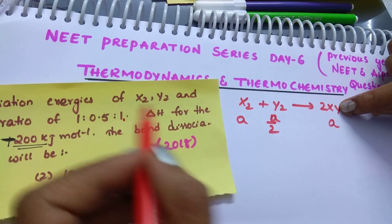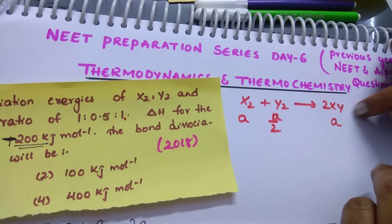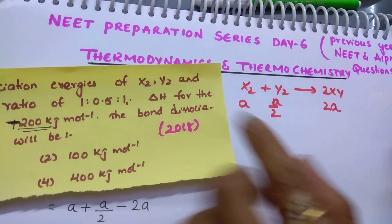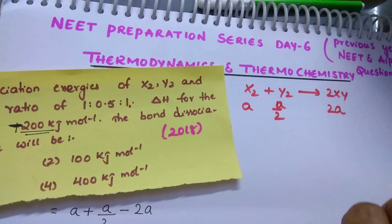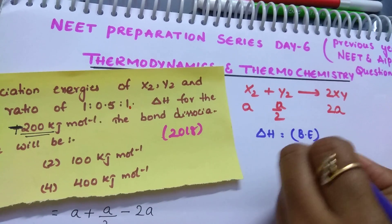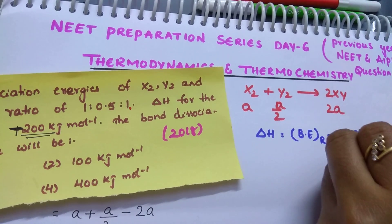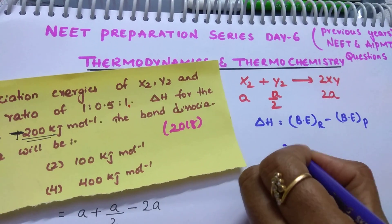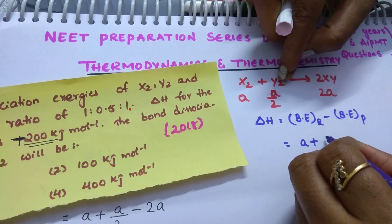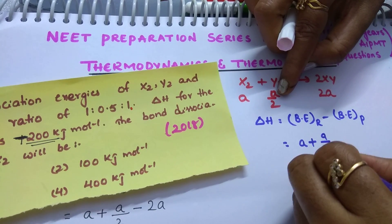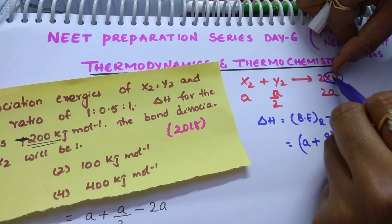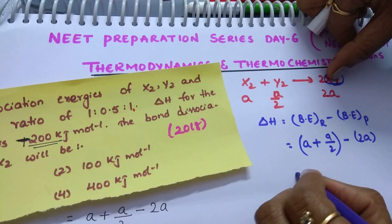Why I am taking A? Because 1 is given, let us take it as A. There are 2 moles of XY, so I am taking 2A. As per the question, they are asking bond dissociation energy of X2. For the reactants: X2 bond dissociation energy is A and Y2 is A by 2.